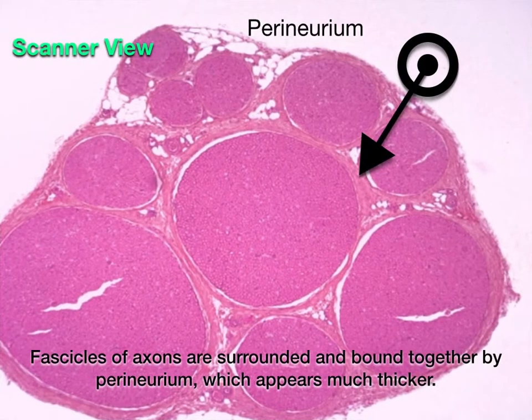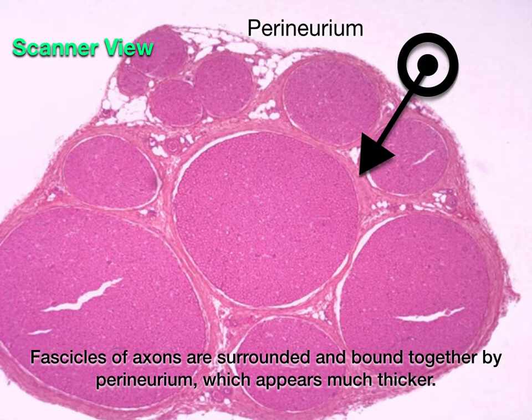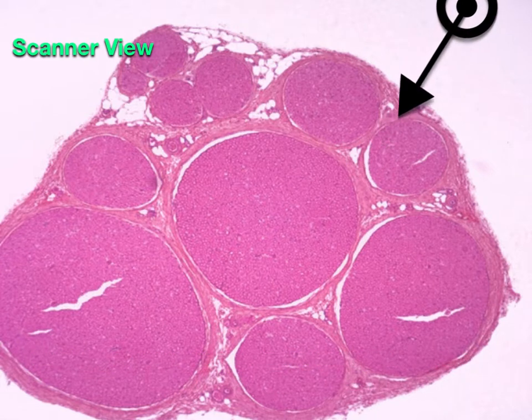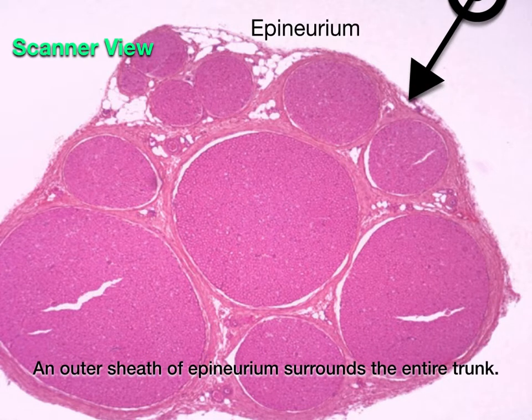The scanner view of the nerve allows you to visualize the different layers of connective tissue that comprise a nerve bundle. Fascicles of axons are surrounded and bound together by perineurium, which appears much thicker. Finally, an outer sheath of epineurium surrounds the entire trunk.